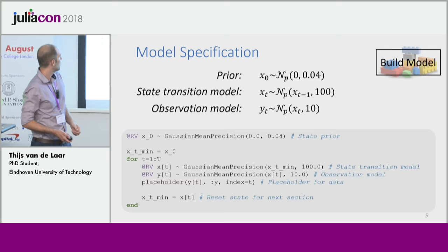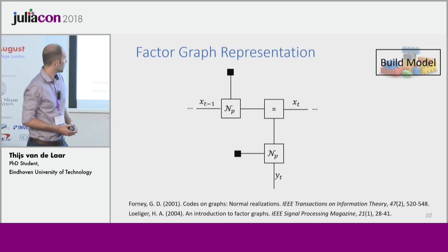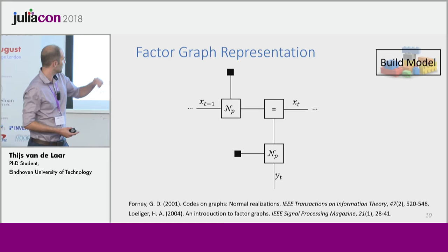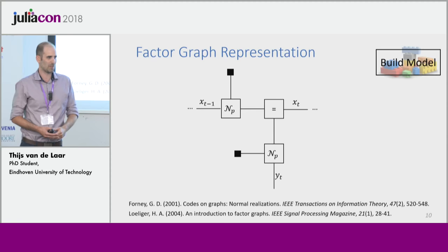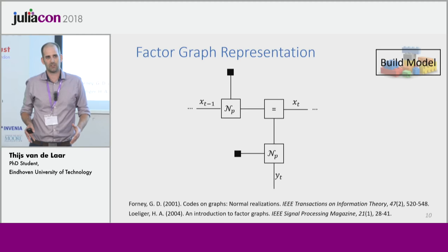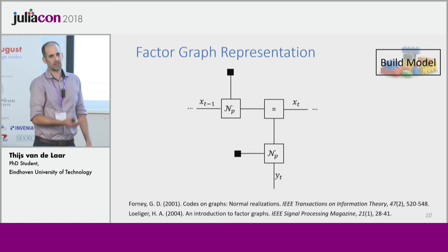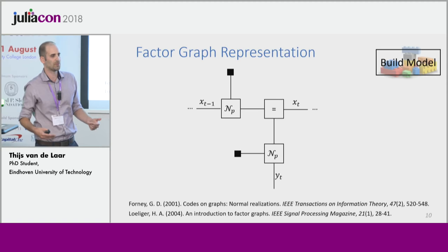Under the hood this builds a Forney-style factor graph. Horizontally you can see the hidden positions, and vertically you can see the observations. There are two excellent references that explain how this is mathematically defined. The main takeaway is that this is a very modular concept — once we go through the adapt phase, we can just add nodes and shift a few edges to come up with a new model, which turns out to be very convenient.